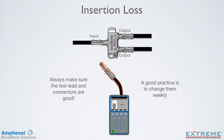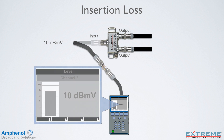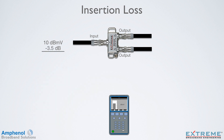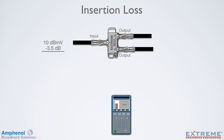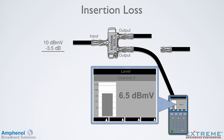First, we'll check to see how much signal we have coming into the input. With the signal level meter, we're going to select channel 2, and we have 10 dBmV. Next, we'll check the output. Since a two-way splitter has 3.5 dB of insertion loss, we'd expect a signal of 6.5 dBmV. If we measure something different, then we could suspect that the splitter may be faulty.